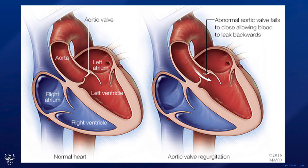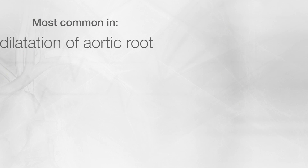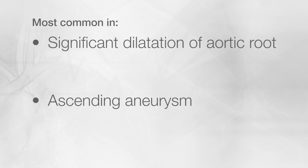This can be a congenitally abnormal valve like a unicuspid valve or a bicuspid valve. Alternatively, this can be an acquired condition where there's previous infection of the valve or endocarditis. In some cases, there can be significant leakage even in the setting of a structurally normal aortic valve. This is most common if there's significant dilatation of the aortic root or an ascending aneurysm.